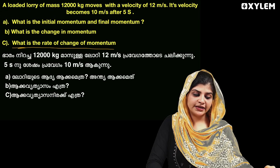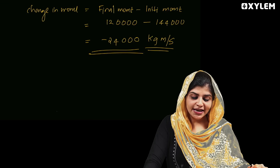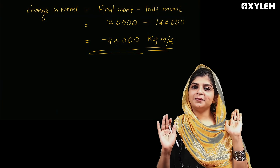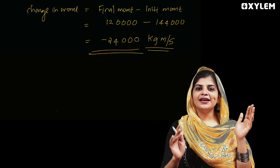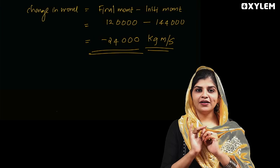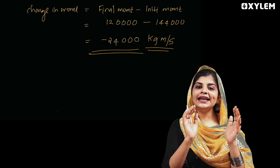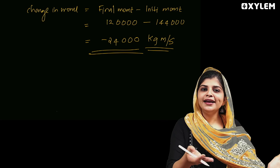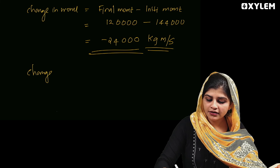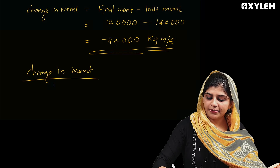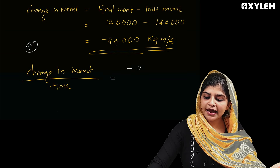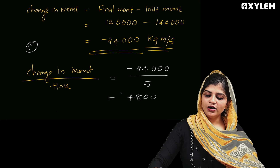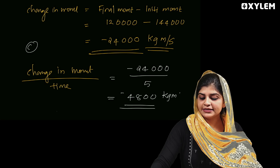The rate of change of momentum is change in momentum divided by time. That is minus 24,000 divided by 5, which gives minus 4,800 kilogram meter per second squared. So that is the rate of change of momentum.